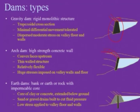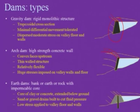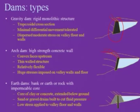The embankment dam has an earth or rock fill with an impermeable core. The core of clay or concrete extends below the ground surface. Sand or gravel drains are built to cut fluid pressure, and low stress is applied to the valley floor and walls, making this type suitable for wide valleys.